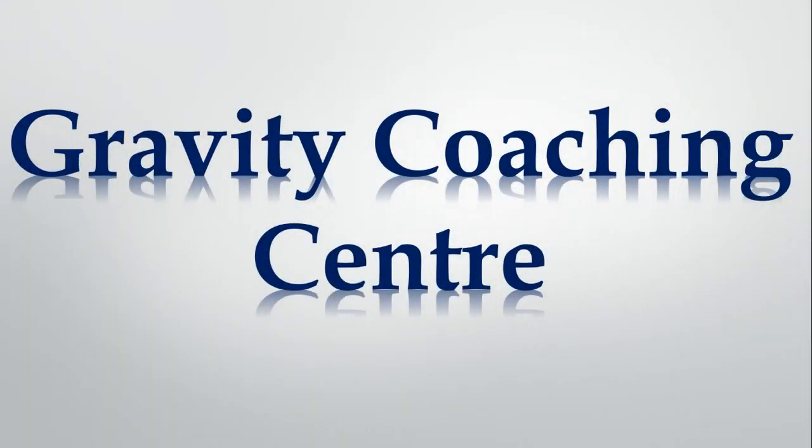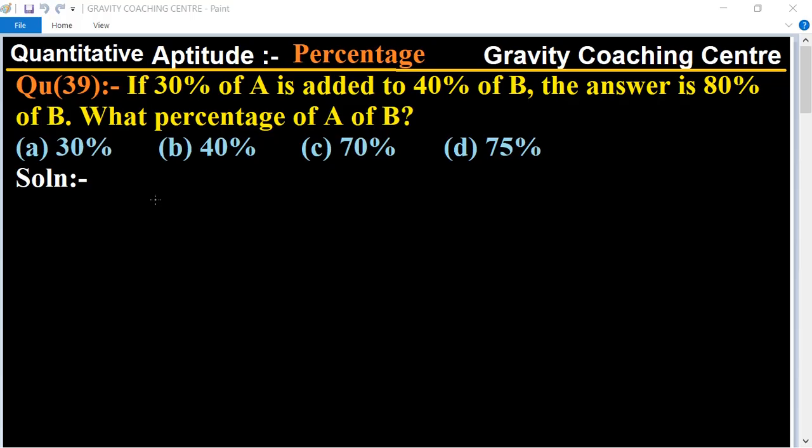Welcome to our channel Gravity Coaching Centre. Quantitative aptitude chapter percentage, question number 39: If 30% of A is added to 40% of B, then the answer is...